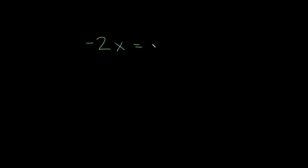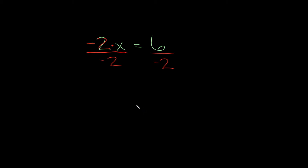Let's try a couple more. Now let's say we had negative 2x is equal to 6. Remember, whenever you have a number next to a variable like this, it always means multiply. So here we have negative 2 times x is equal to 6. Since we're multiplying, we're going to divide — by whatever we're trying to get rid of, which is negative 2. And remember, whatever you do to one side you have to do to the other, so we divide by negative 2 on both sides.